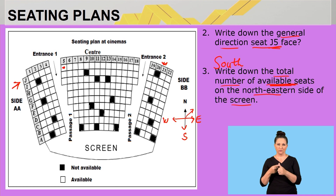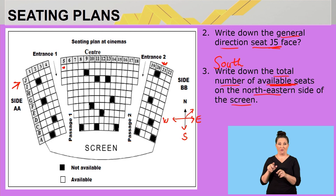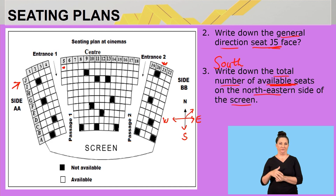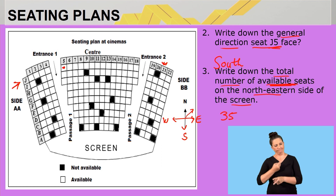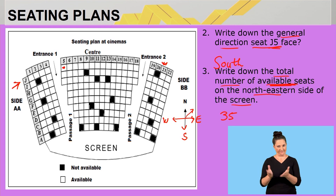Now I count the available seats — the blank ones — on the northeastern side: 4, 8, 12, 16, 20, 24, 27, 30, 33, 35. I counted 35. Let's double-check: 4, 8, 12, 16, 20, 24, 27, 30, 33, 35. So there are 35 available seats on the northeastern side.